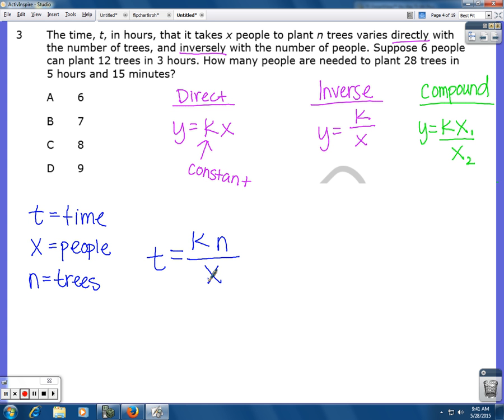Now, first I'm going to plug in the numbers that I have in order to find the constant. Then I'm going to rewrite my equation and use the new numbers to solve for what they're asking, which is the number of people. So I'm going to start out by saying we have six people. So here's my equation. It says suppose six people, so that goes here, can plant 12 trees, and I still have my constant there in three hours. So I just plugged in the information that I had here. Six people, 12 trees, three hours. Now I'm going to solve for my constant, which is k.